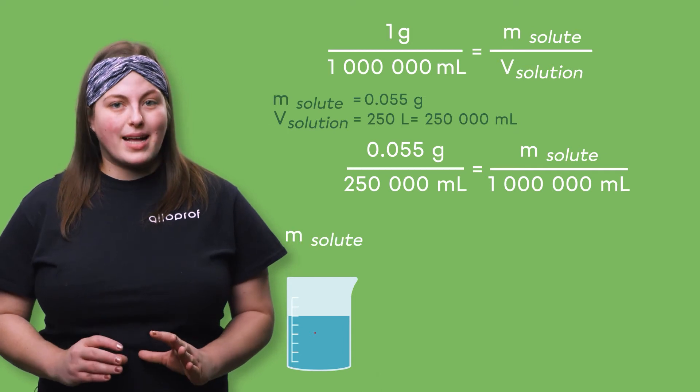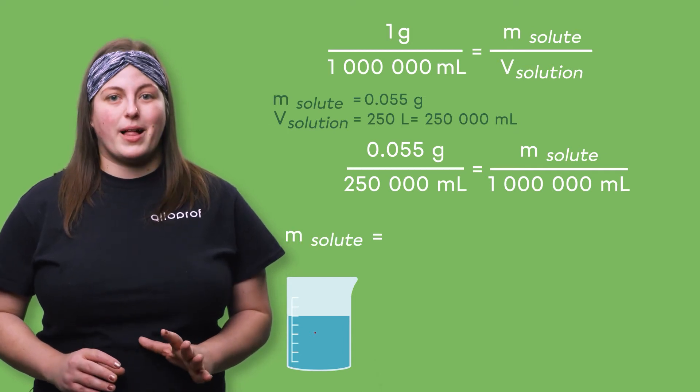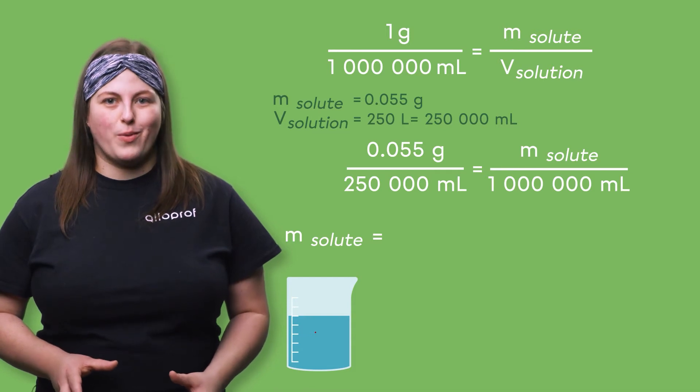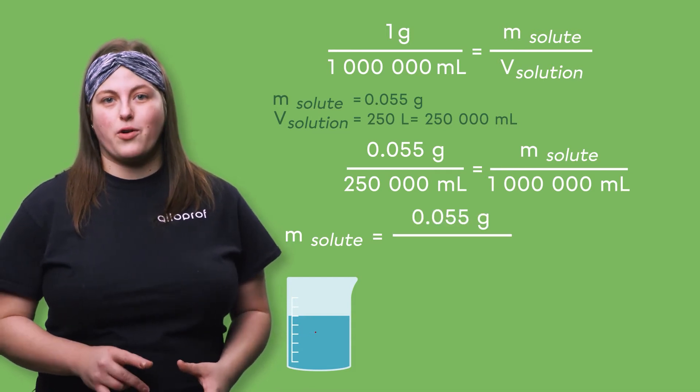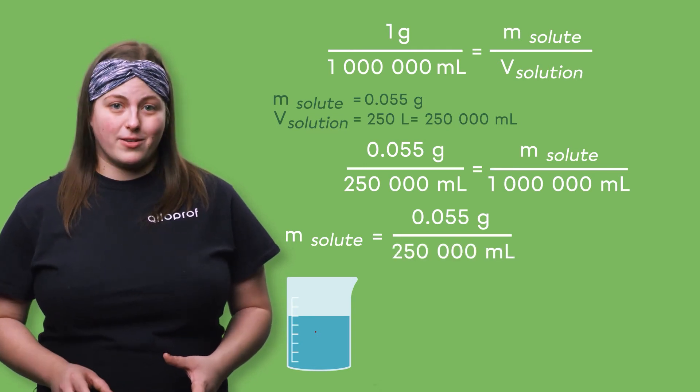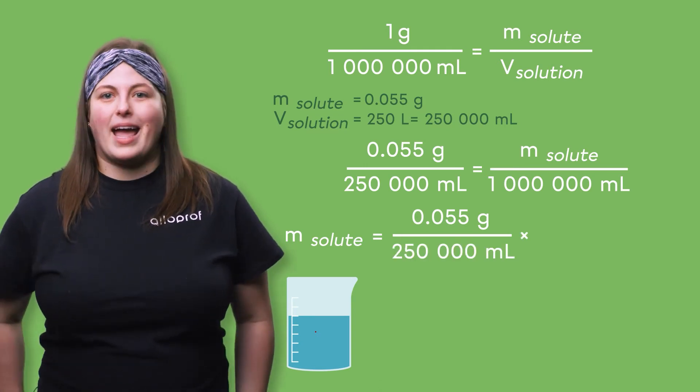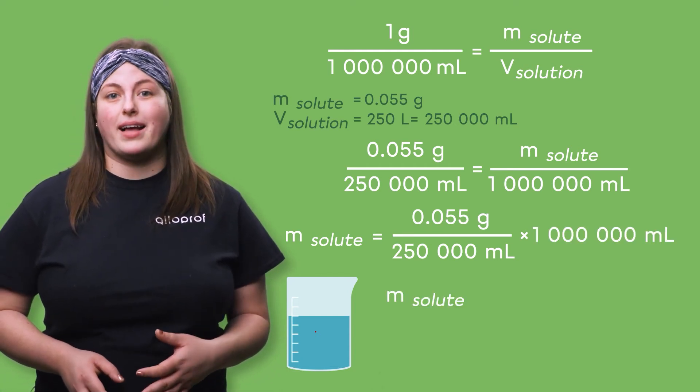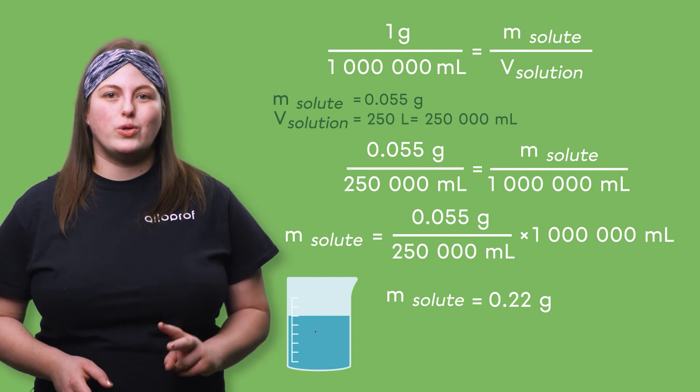To isolate the mass of the solute, we multiply each side of the relationship by 1 million. We must therefore divide 0.055 grams by 250,000 milliliters and then multiply everything by 1 million milliliters, which gives us a mass of 0.22 grams.